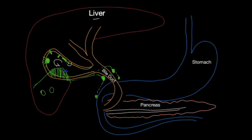Typically, gallbladder polyps earlier on do not cause any symptoms, unless they are close to the neck of the gallbladder. In that location they may cause biliary-type pain, which is pain below the right ribcage radiating through to the back.